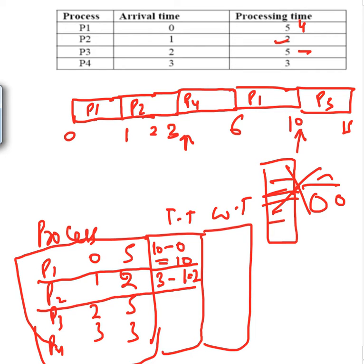For P3: finished at time 15, arrived at time 2, so turnaround time = 15 − 2 = 13. For P4: arrived at time 3 and finished at time 6, so turnaround time = 6 − 3 = 3.